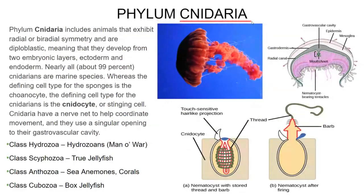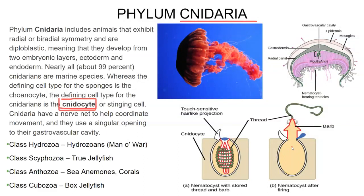Phylum cnidaria — cnidaria is named after the cnidocyte. The cnidocyte or nematocyst is going to be a stinging cell. These are specialized cells found only in the cnidarian family, so both jellyfish and sea anemones have this. It's a touch-sensitive little barb — when the barb touches something, it will eject a second barb that attaches into the organism being stung, releasing a little venom. Depending on the type of jellyfish or cnidaria, this could be very severe or very mild.